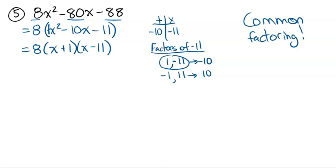So there you go — that's the process. To reiterate: first common factor if possible, then find two numbers that add to the middle term's coefficient and multiply to the first term times the last term (the coefficients specifically). Then break the middle term into those two factors and factor by grouping. Finally, write it out in brackets. Hope that was helpful — please comment below if you found it helpful, and don't forget to like and subscribe. Thanks so much.